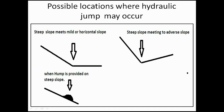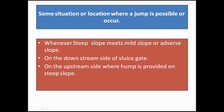The third case is whenever a hump is provided on the steep slope — a hump being an increment in the bed of the river or flow channel. So to summarize: hydraulic jump can occur when a steep slope meets a mild or adverse slope, on the downstream side of a sluice gate, and on the upstream side when a hump is provided on a steep slope.